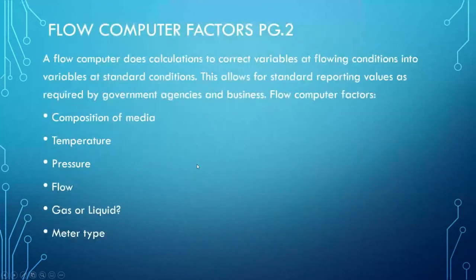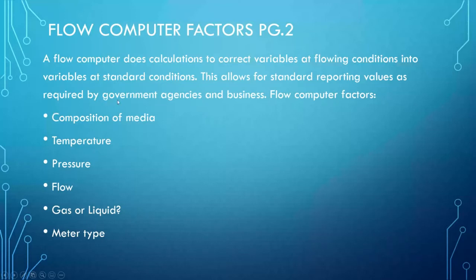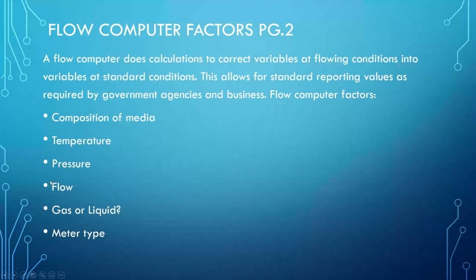The flow computer does calculations to correct variables at flowing conditions into variables at standard conditions. This allows for standard reporting required by government agencies and businesses that rely on exchange of goods and services. The variables involved include the composition of the media, the temperature, the pressure, the flow, whether it's a gas or liquid, and the type of meter being used.